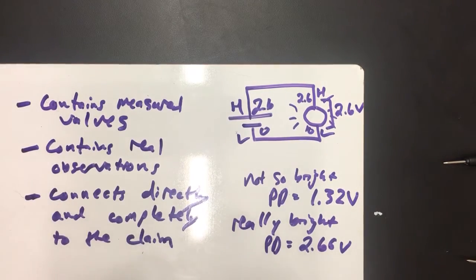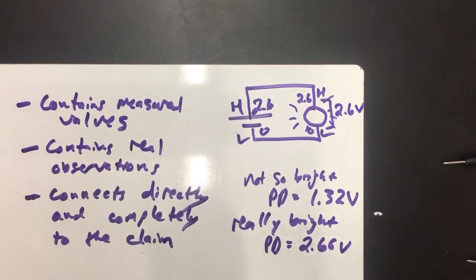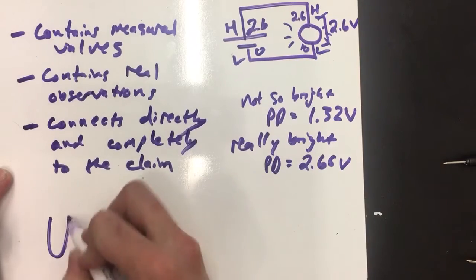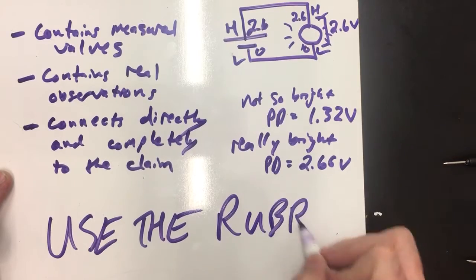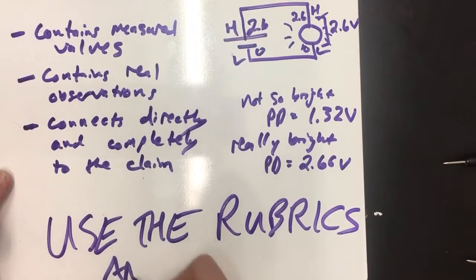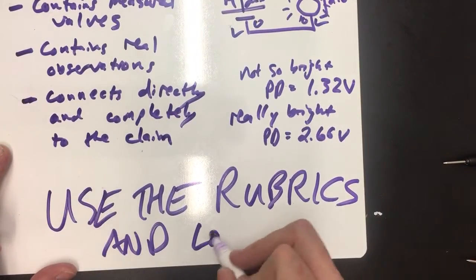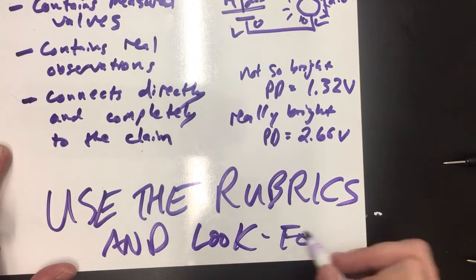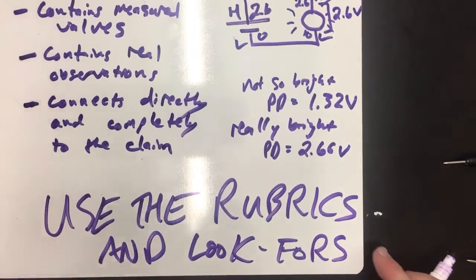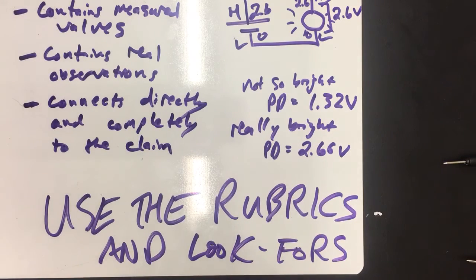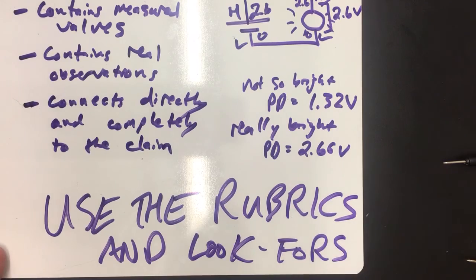I haven't made a video about that one, but look at the rubric closely, I'm going to write that as a hint here. Use the rubrics and look-fors. Use the rubrics and look-fors for both selection of evidence and justify an explanation to show exactly what you are expected to do to get a high CogSkill grade.